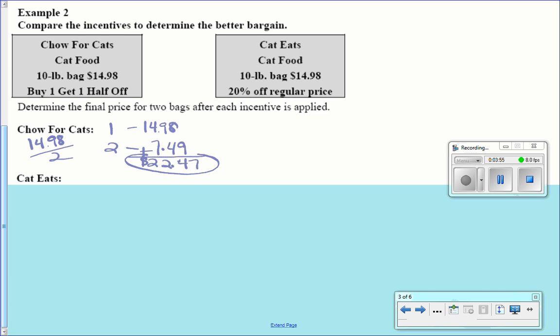Okay, this is for Chow For Cats. And then Cat Eats, it is 20% off. So we're going to take $14.98 and multiply by what? 0.8. Okay. We're only paying 80%. And what is that? But we're buying how many? Two. So we'll multiply that by two. That's what? Good. $23.96.